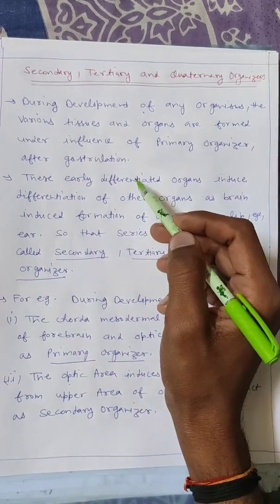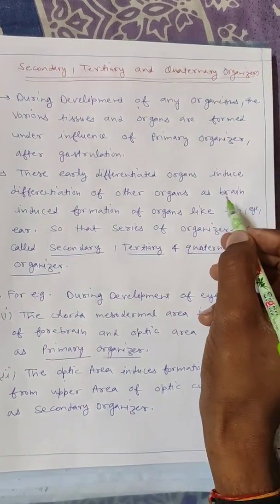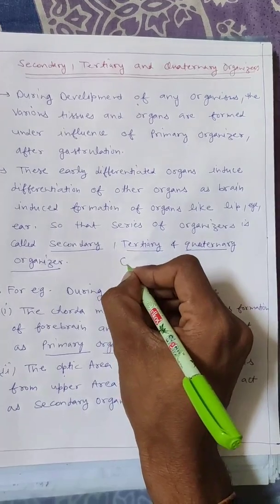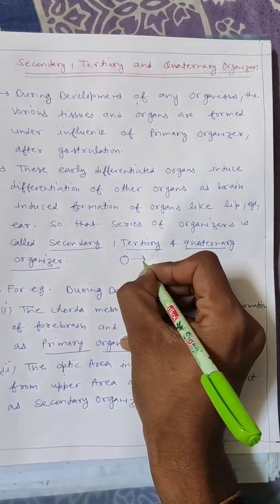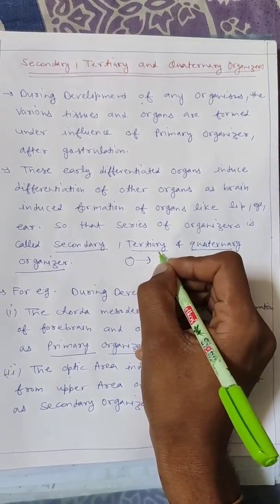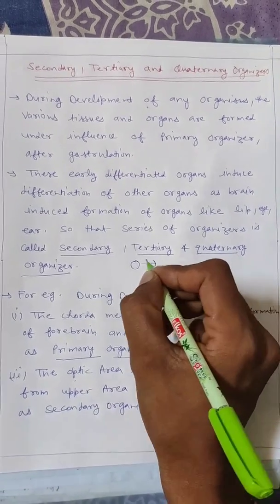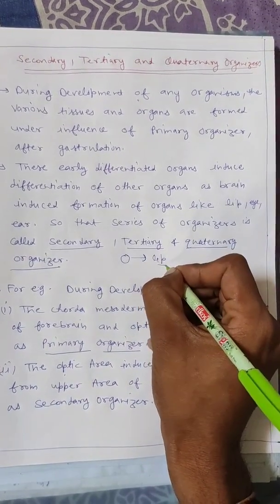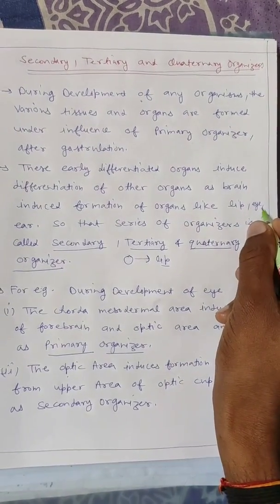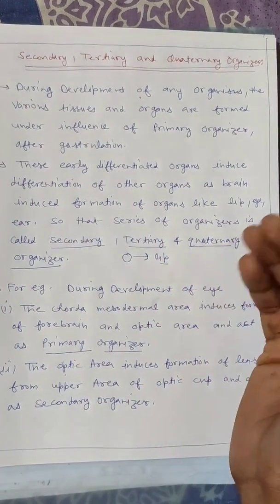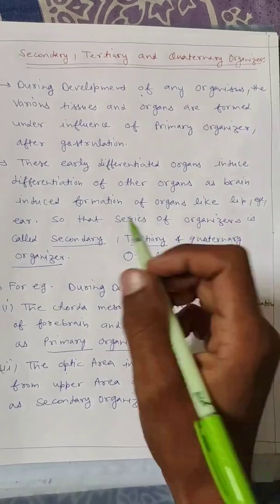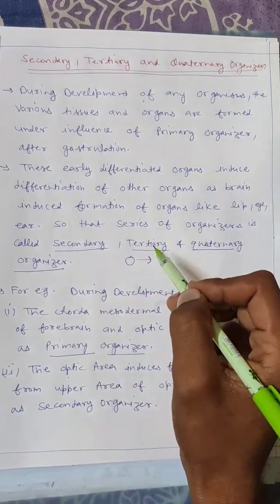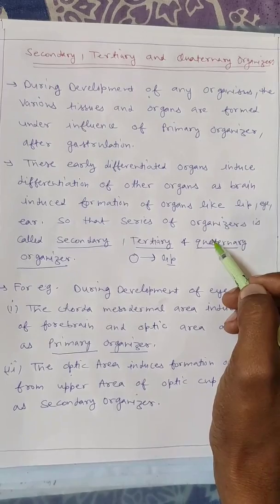The early differentiated organs — like, for example, the brain — induce further formation of other organs, such as the lip and eye. This differentiation of organizers is what we call secondary organizer, tertiary organizer, and quaternary organizer.